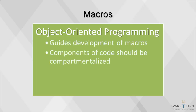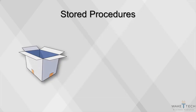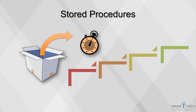Most companies with a data science team will build out a repository of customized macros called a codebase. It makes it easier to manage certain tasks, such as committing changes and version control. These concepts are taken from computer science best practices of developing software. Another concept from computer science is object-oriented programming, which guides the development of macros based on the idea that components of code should be compartmentalized. The main benefit of this technique is that it makes large projects easier to develop and maintain.